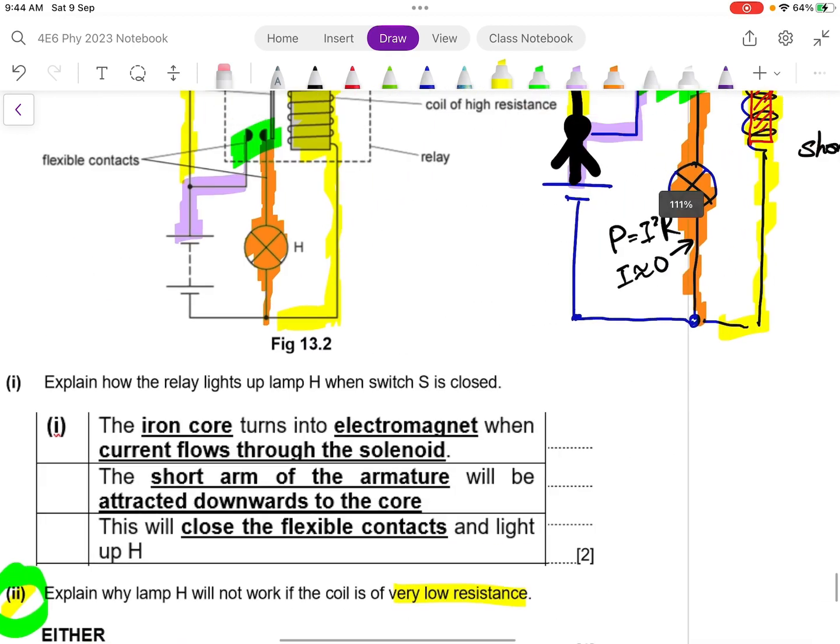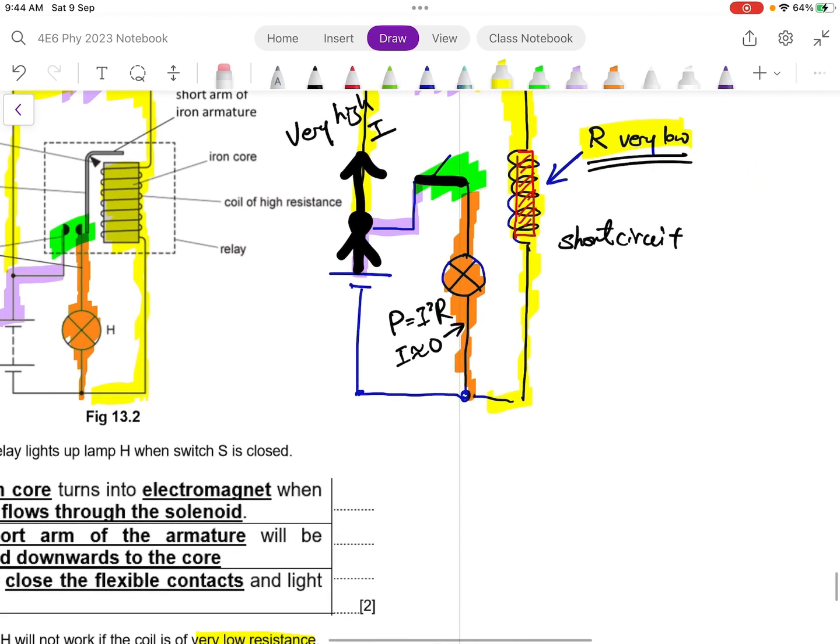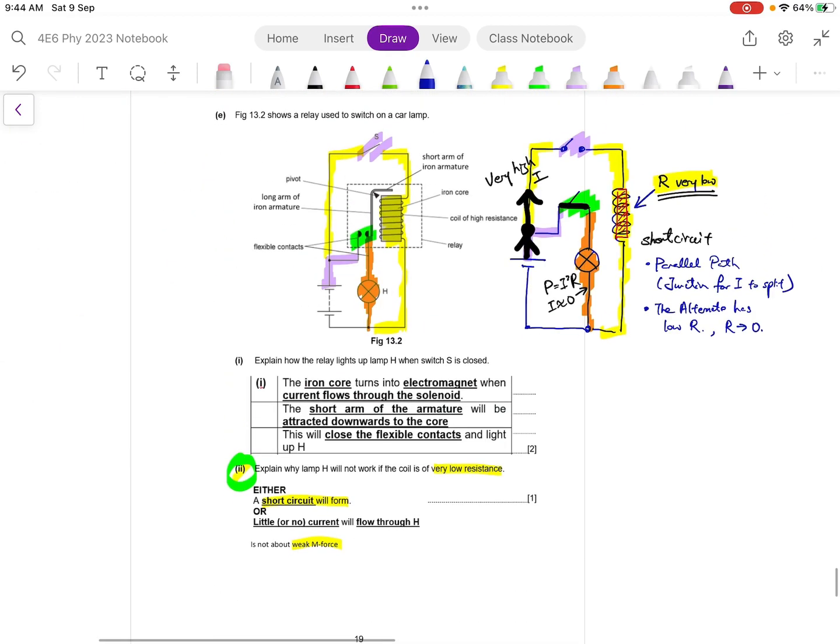So how do you detect short circuit? Number one is that there must be a parallel path. That means there must be a junction for your current to split. The other criteria for a short circuit to form is that the alternate path has low resistance. Meaning resistance that is close to zero. Okay? So that would be your question 13 either. Thank you.